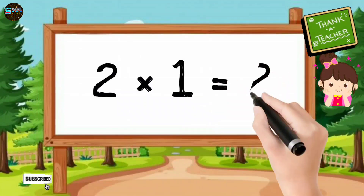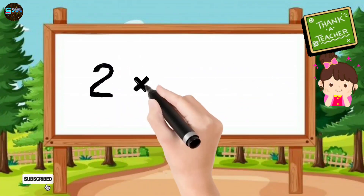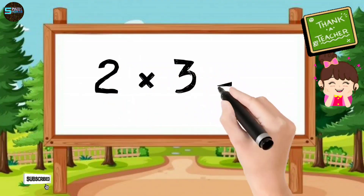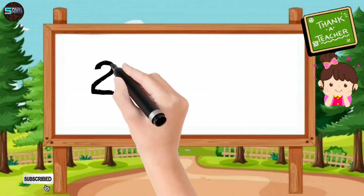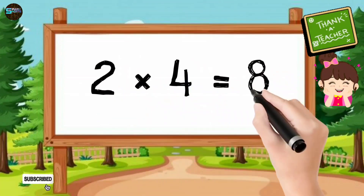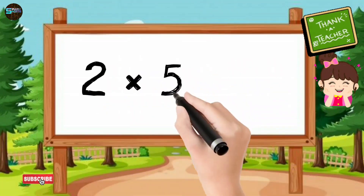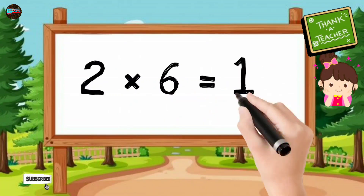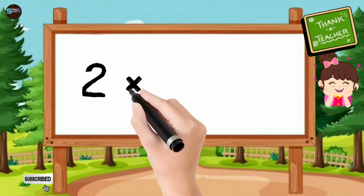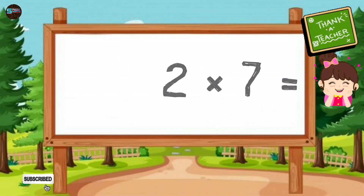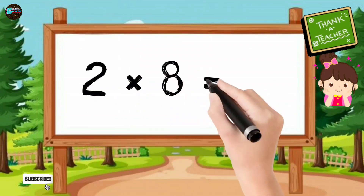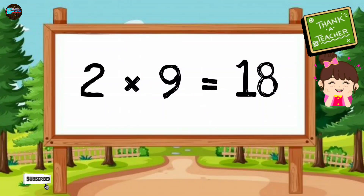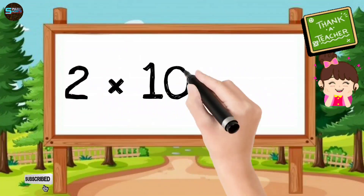2 1s are 2. 2 2s are 4. 2 3s are 6. 2 4s are 8. 2 5s are 10. 2 6s are 12. 2 7s are 14. 2 8s are 16. 2 9s are 18. 2 10s are 20.